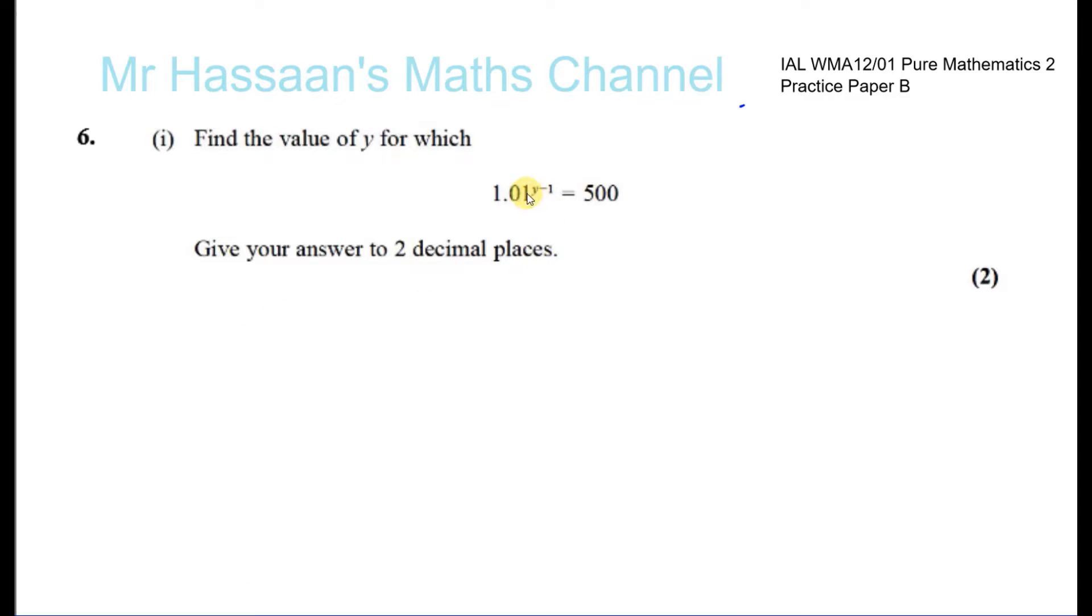So what I'm going to do is I'm going to say, okay, let's take the log to the base of 1.01. So I'm going to take the log to the base of 1.01 of 1.01 to the power of y minus 1. Therefore I have to take log to the base of 1.01 of the other side as well. So now this, you can use a power law, so you'll have y minus 1 times this which is 1, log to the base of something to itself is going to be 1.